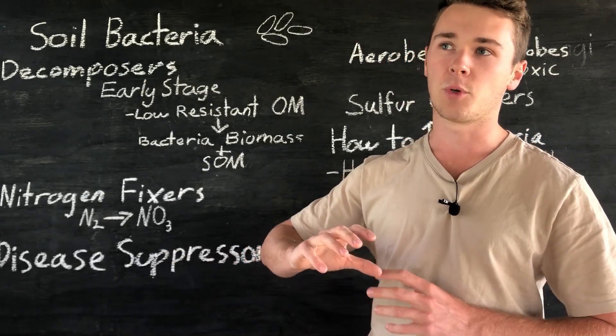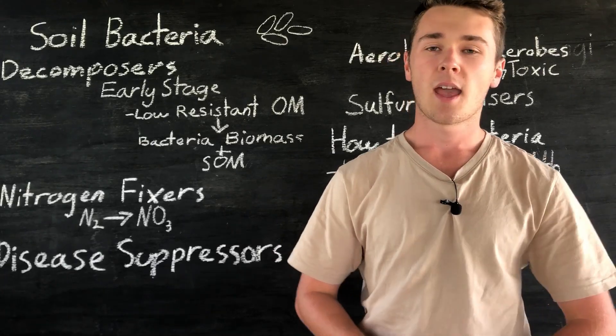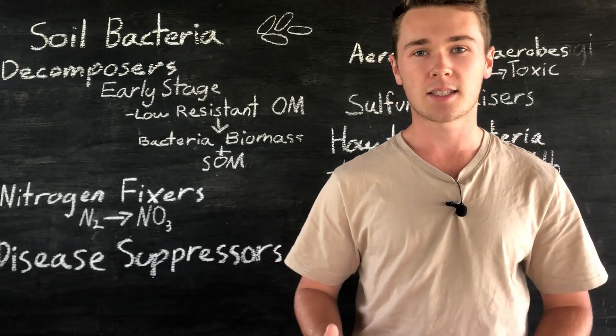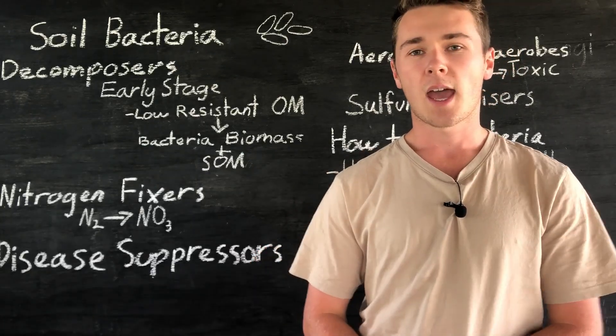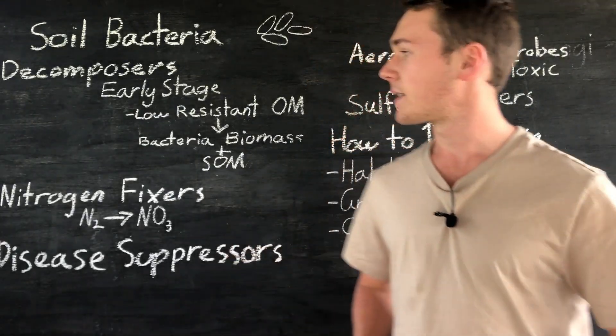Some bacteria will reduce their population size depending on the soil pH or if there's moisture or sunlight, whereas others can survive in really extreme conditions. So there's a range of different types of bacteria.